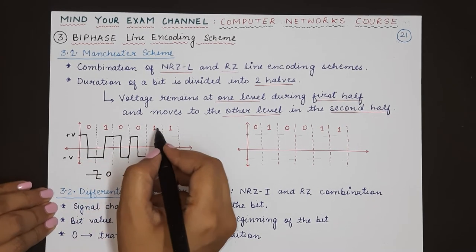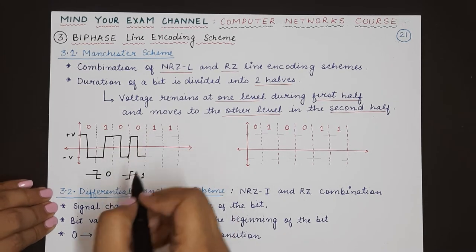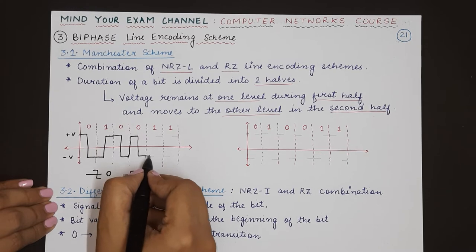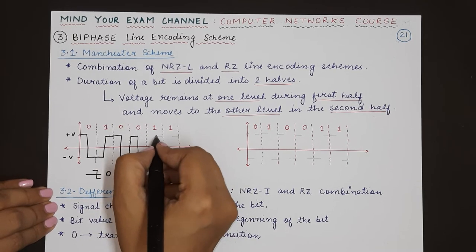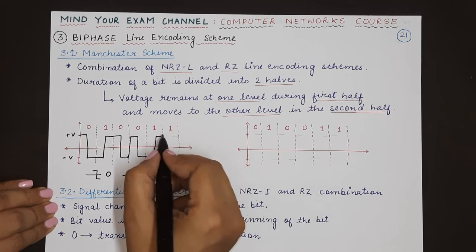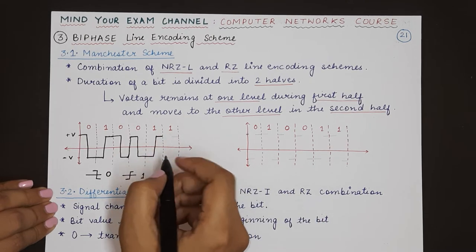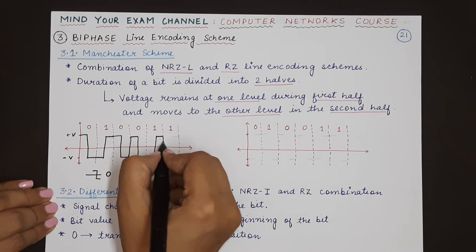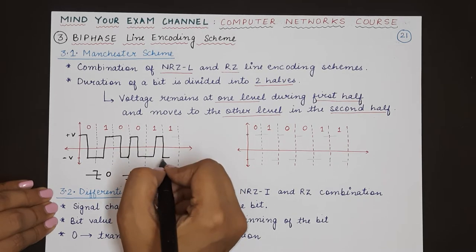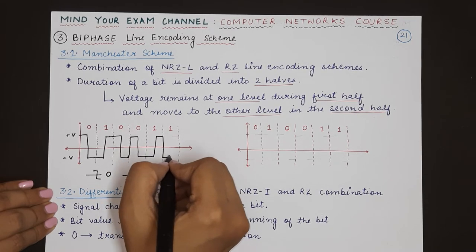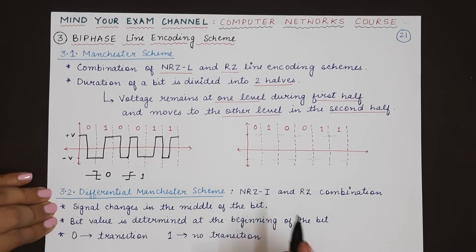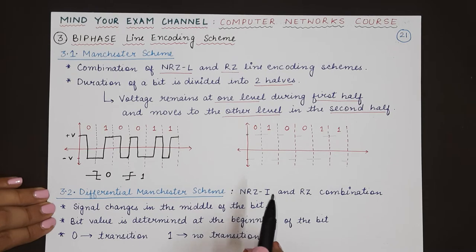For the next one, we start at negative voltage, then transition in the middle of the bit to positive voltage. For the following one, since one starts from negative, we transition from positive to negative, remain there till the middle, then move to positive voltage at the end of the bit.